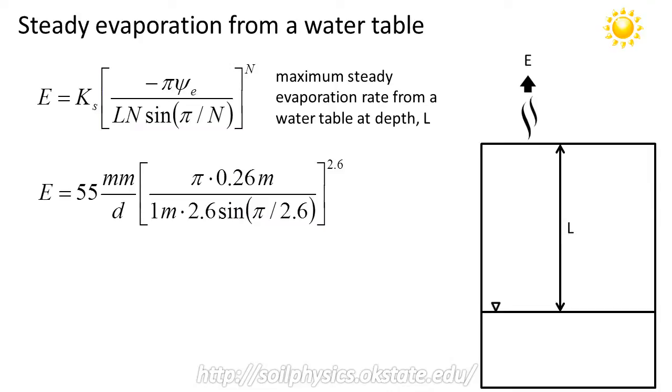Plug this into your calculator. I encourage you to work these from the inside out. So first start by calculating the argument for the sine function, and then proceed outwards from there. And you will find the maximum steady evaporation rate for a clay loam soil with a water table at 1 meter depth is approximately 3.2 millimeters per day.